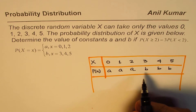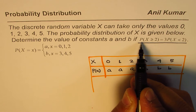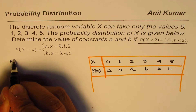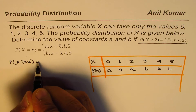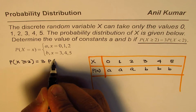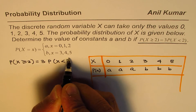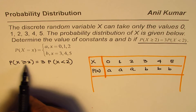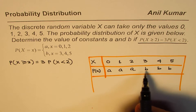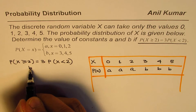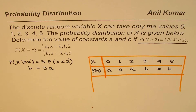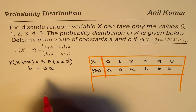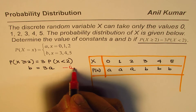What else is given to us? We are also given this condition. It says that the probability for x greater than or equal to 2 is equal to 3 times the probability for x less than 2. Now, the probability for x greater than or equal to 2 refers to the B values, so we can write B equals 3 times A. So we get a relation between A and B: B equals 3A. Let me call this equation number 1.